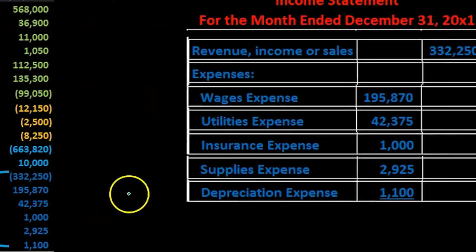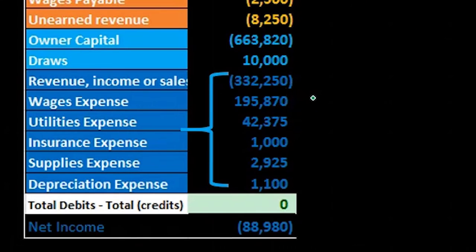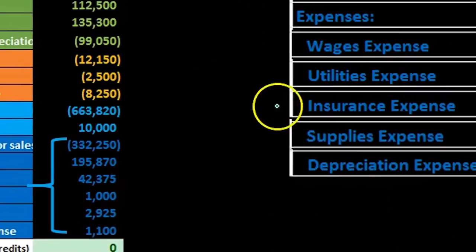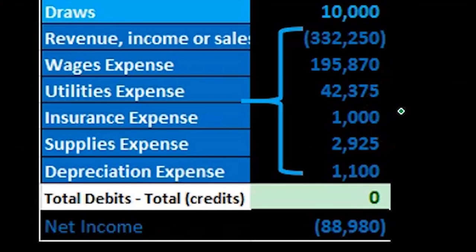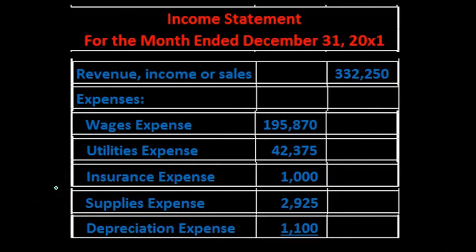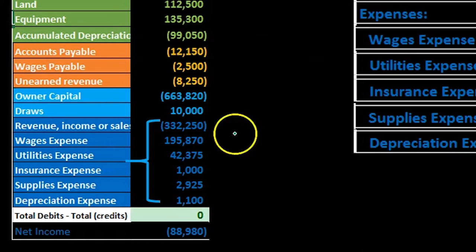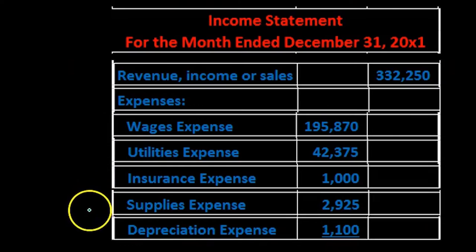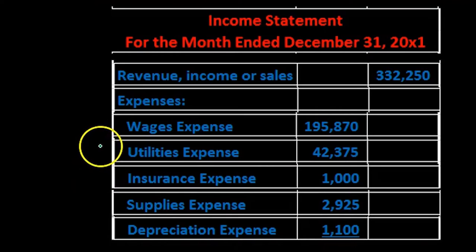Finally, depreciation expense is added. Note this is a simplified income statement. With more accounts, you might group multiple similar accounts — for example, several types of insurance — into one line item, since readers of financial statements may not need that level of detail. Also, the ordering of expenses can vary; one approach is listing from highest to lowest amount, though that's not always strictly followed.